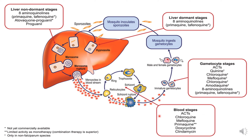Once the liver cell ruptures, the malarial parasite is liberated into the bloodstream. In the blood stage, chloroquine, mefloquine, and primaquine — the 4-aminoquinoline derivatives — are more effective in the erythrocytic stage. In the gametocyte stage, quinine, chloroquine, mefloquine, and amodiaquine are selective drugs which affect the gametocytic stage. This shows how these drugs affect the various stages of the malarial parasite.